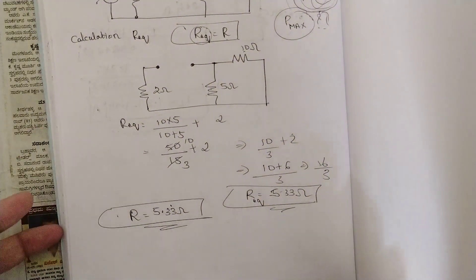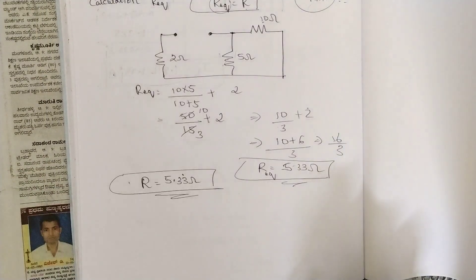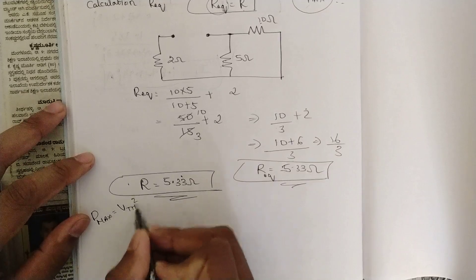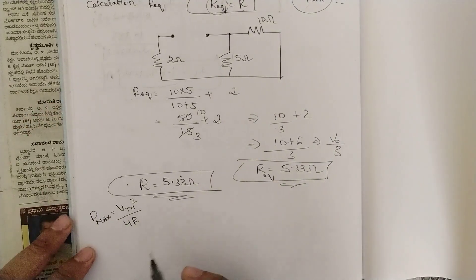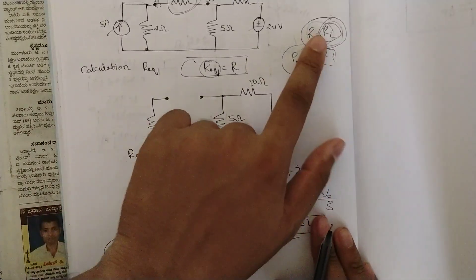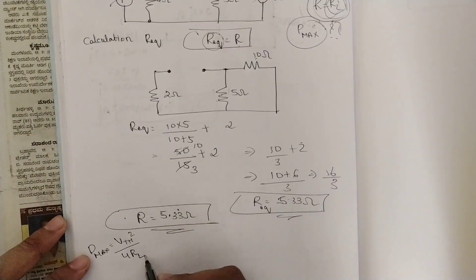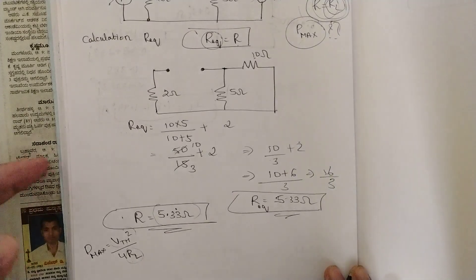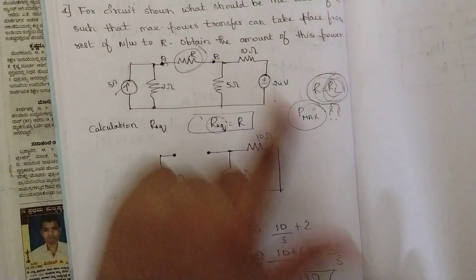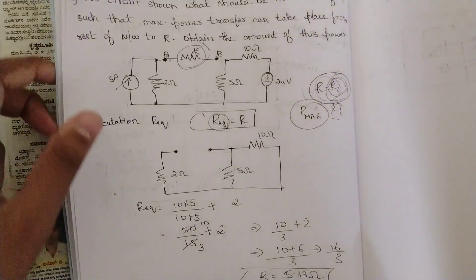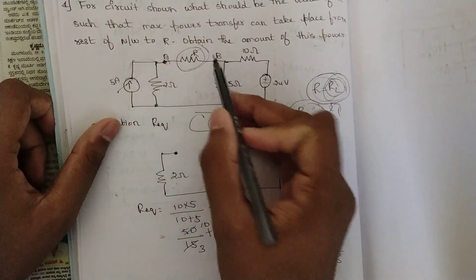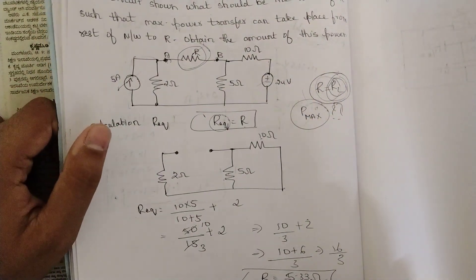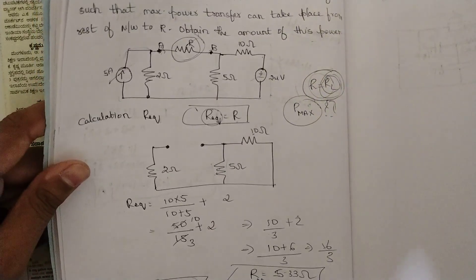Now our next job is to find the maximum power. We know P_max = Vth² / (4 × R), since R equals R_L. We have already found R = 5.33 ohms, so now we need to find Vth, the Thevenin voltage. We remove the load and keep the rest of the circuit as-is to solve for the Thevenin circuit.